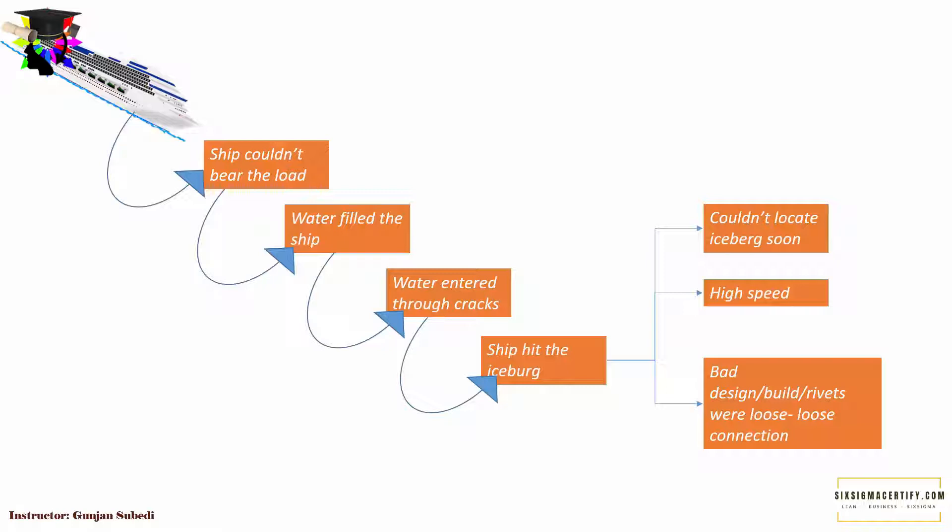So you see here that we can still use the 5-Why analysis for multiple problems. But it gets more complicated if the problem could have many root causes or multiple root causes. In that case it is best to go to another root cause analysis tool: Fishbone or Ishikawa diagram, which breaks down the root cause based on different causes and sub-causes.